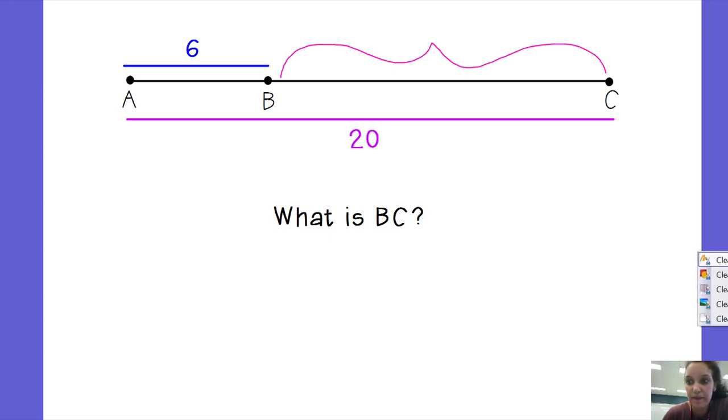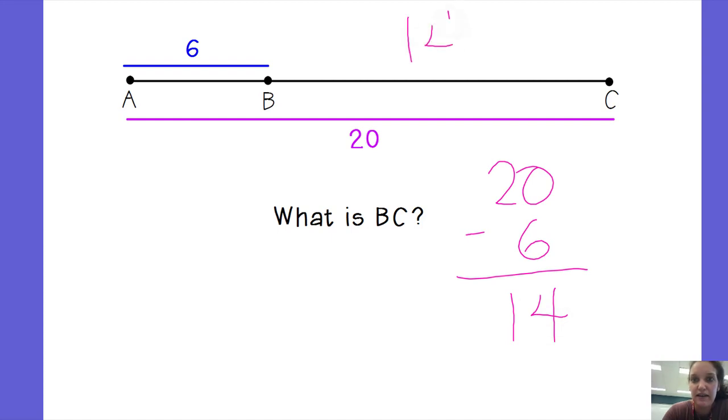So I know the whole thing is 20, I know this piece AB is 6, so I'm gonna do 20 minus 6 and that gives me 14. BC, this piece right here, BC is 14.